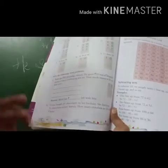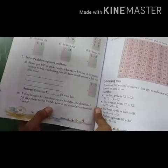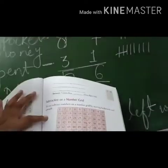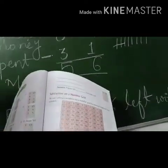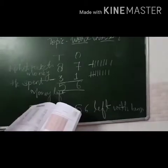Now you can solve the B questions. Vinita bought 85 chocolates on her birthday. She distributed 54 chocolates to her friends. So how many chocolates are left with Vinita? Aapko bhi yeh wali word problem solve karni hai, with the number grade also. This is your classwork and this is your homework.